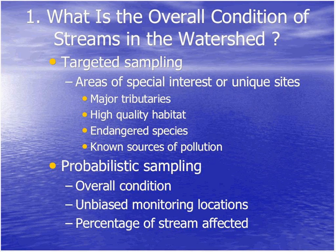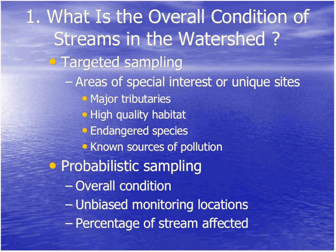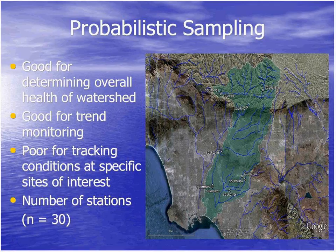Another method that has become very popular is probabilistic sampling, or randomized sampling. It tends to be a lot better for assessing the overall condition of a watershed because your sampling points are picked in an unbiased manner and represent a certain area. You can come up with a statistical answer to what percentage of your stream is affected — what percentage is in good shape or bad shape — and you also get an estimate of the variability in your answer.